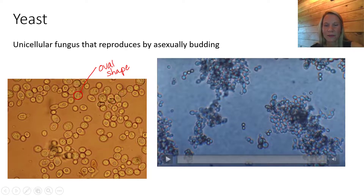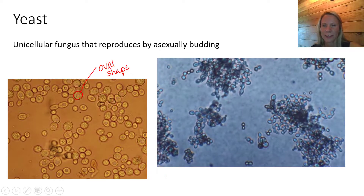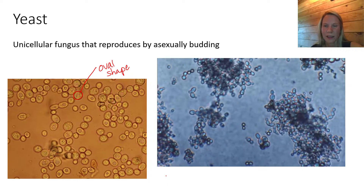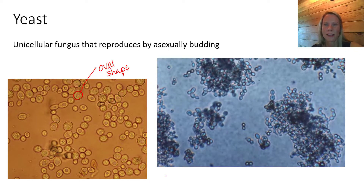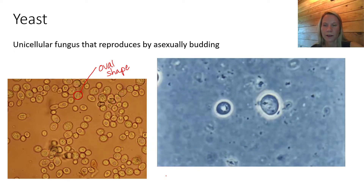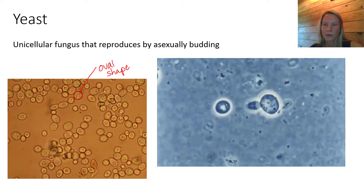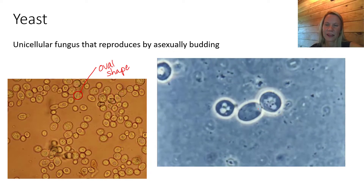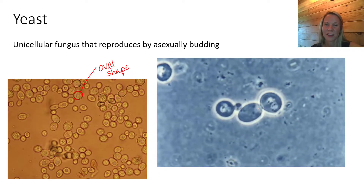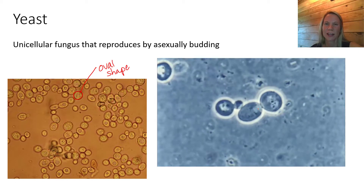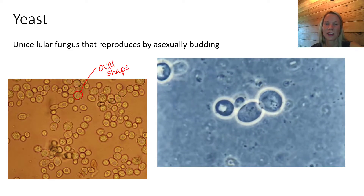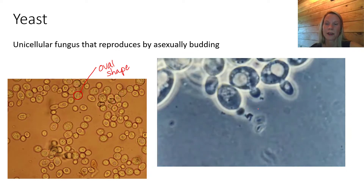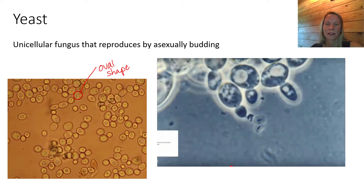How do yeast reproduce? Let's go under the microscope and watch them time-lapsed. They look sort of like little bubbles. What we're looking for is a process called budding. Zooming in - you can see it's reproducing by making an identical copy of itself called a bud that grows off the side of the cell and then breaks off. It's a lot like mitosis, though the difference is unequal division of the cytoplasm.